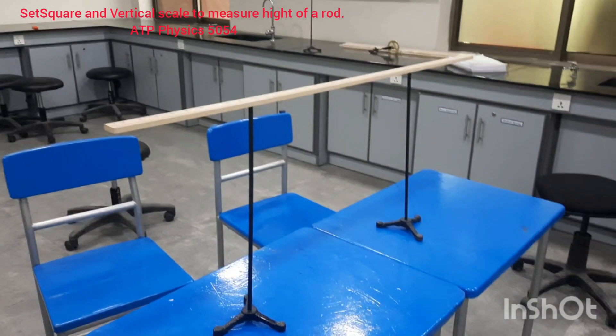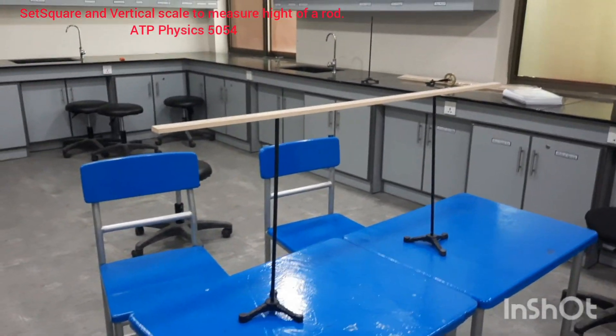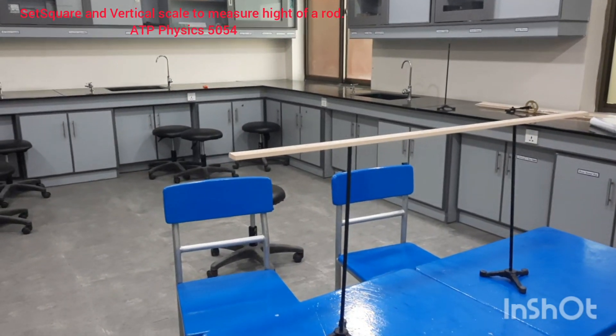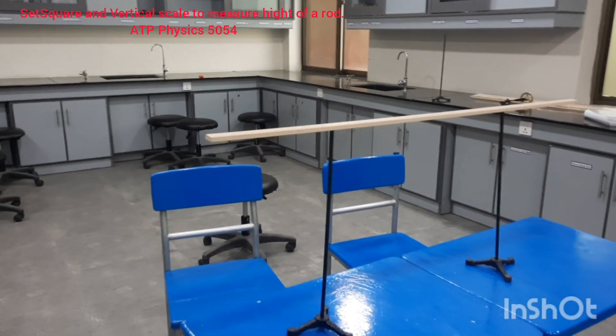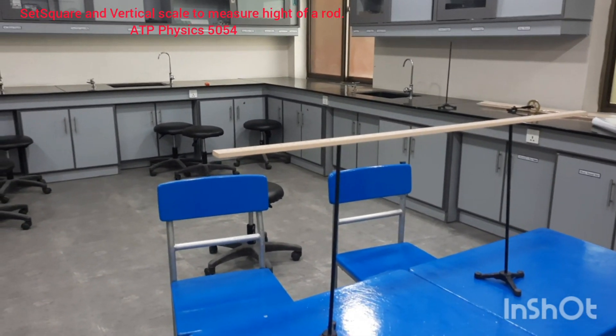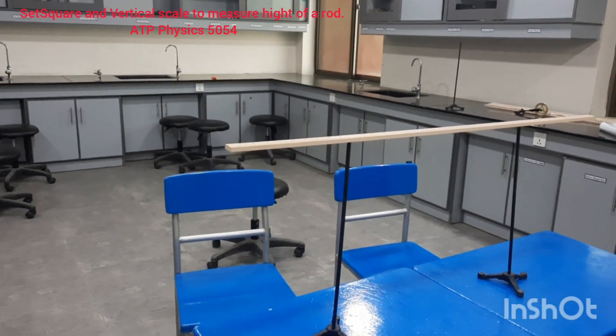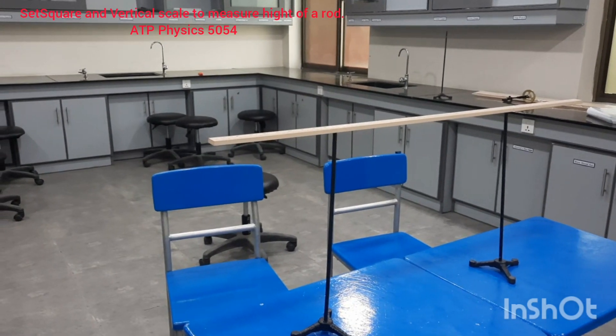One trick is that you use a spirit level. You place the spirit level on this meter rule and the spirit level will decide if this is horizontal or not. But in this video we are going to learn that with the help of another scale, how you will decide if this rod is horizontal to the table.